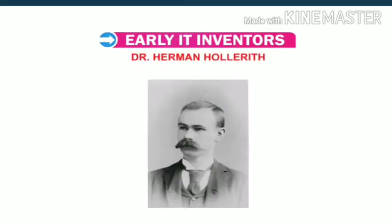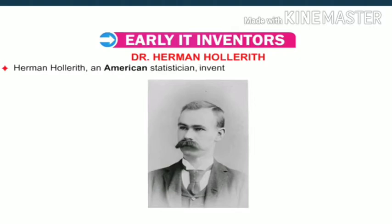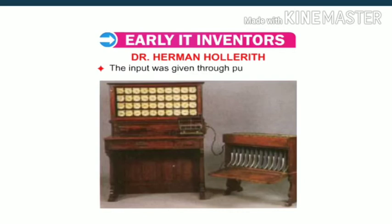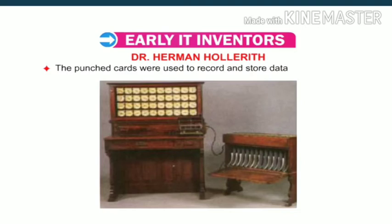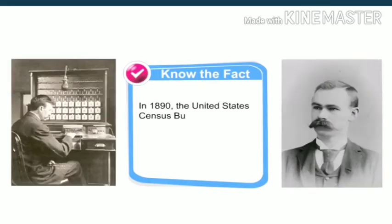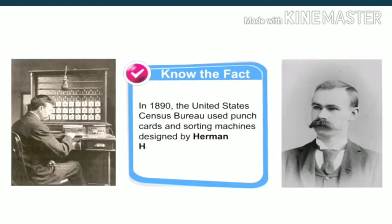Students, have you heard about Dr. Herman Hollerith? Let me tell you about him. Herman Hollerith, an American statistician, invented a machine called the tabulating machine. It was capable of reading data, processing it and giving the desired output. The input was given through punched cards, which were used to record and store data or information. Note that in 1890, the United States Census Bureau used punch cards and sorting machines designed by Herman Hollerith.